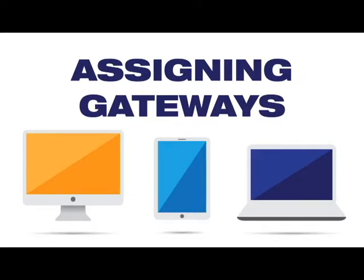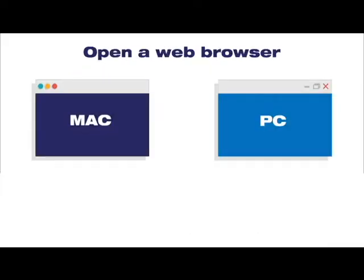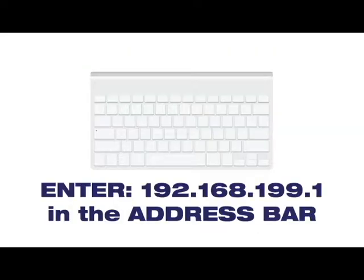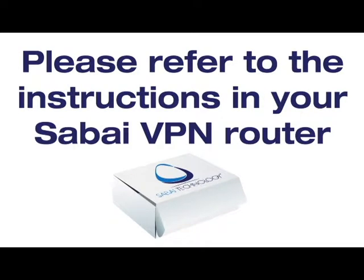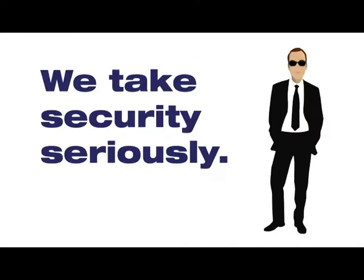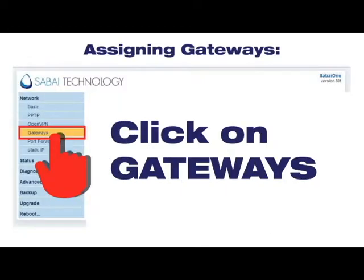Now, let's assign your gateways. Open a web browser and enter 192.168.199.1 in the address bar. Please refer to the instructions in your Sabai VPN router box for your username and password. Click on Gateways in the menu bar to the left under Network.